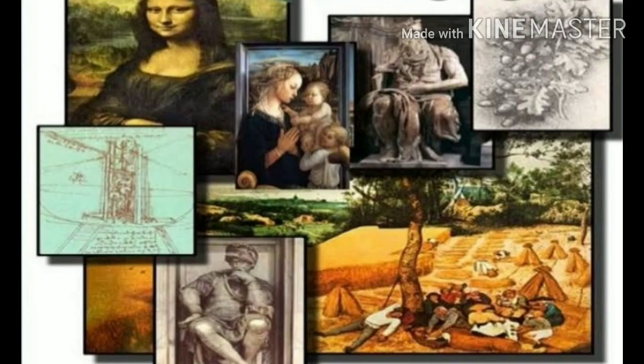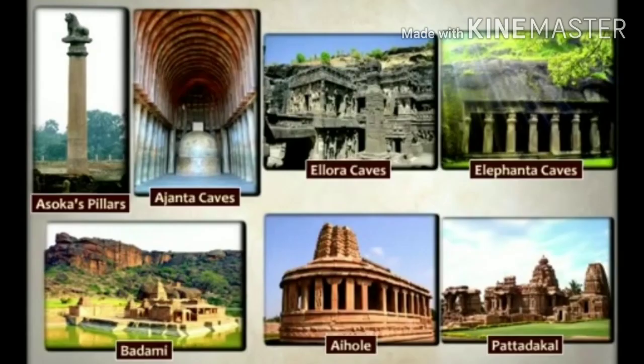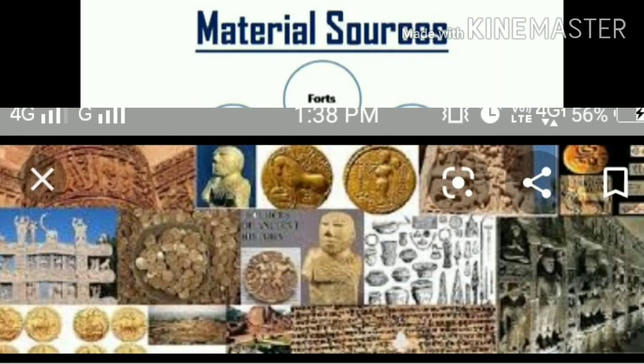Coins also show the language and the metal used during that time. Artefacts comprise pottery and jewellery made in earlier times. Pottery is made of clay, which means clay was used to make pottery in those days. The jewellery is made of bronze, so we understand that in olden days jewellery used to be made of this metal. With the help of these things, we came to know about the civilization and how the people lived in that period.